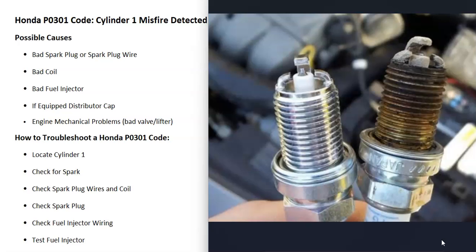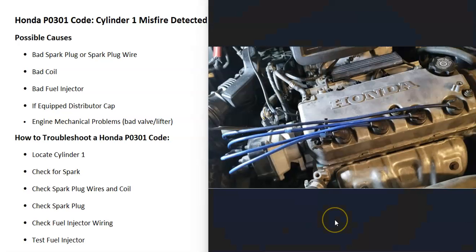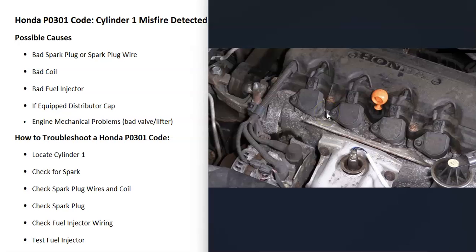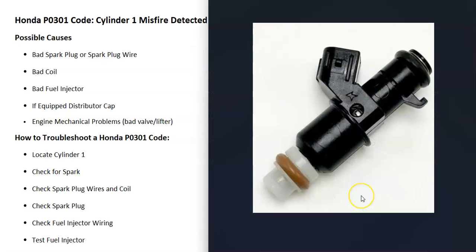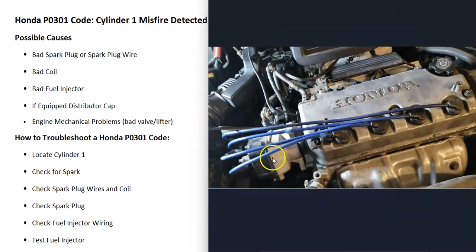What could cause a P0301? You could have a bad spark plug or a bad spark plug wire going to the spark plug. You could have a bad coil on cylinder number one or some kind of issue with the coil. There could be a bad injector on cylinder number one. If you have an older Honda with a distributor cap, there might be an issue with that. Mechanical problems can also cause issues, but that's not very common — usually it's something with the spark or the fuel.